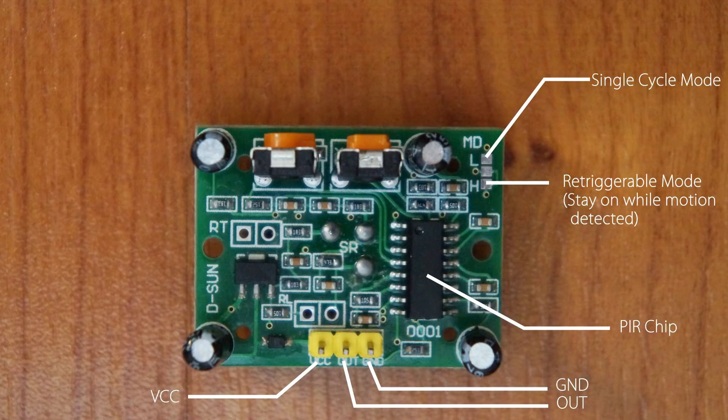Single mode says after one trigger it'll wait a certain amount of time before it can be triggered again, whereas retriggerable mode says every time it senses motion it will reset the delay time. Next we have the two knobs at the top.